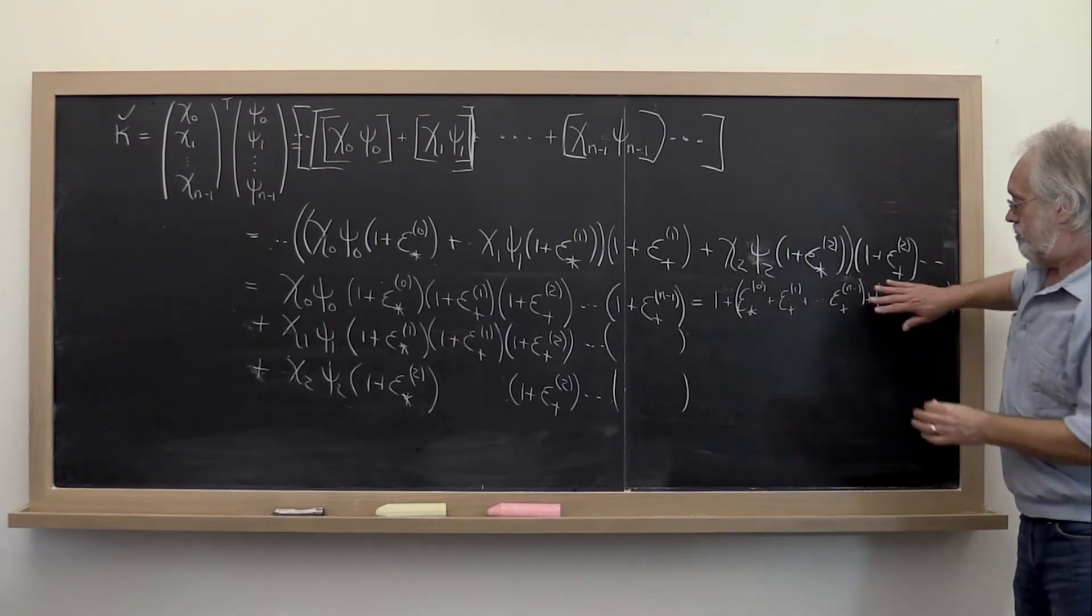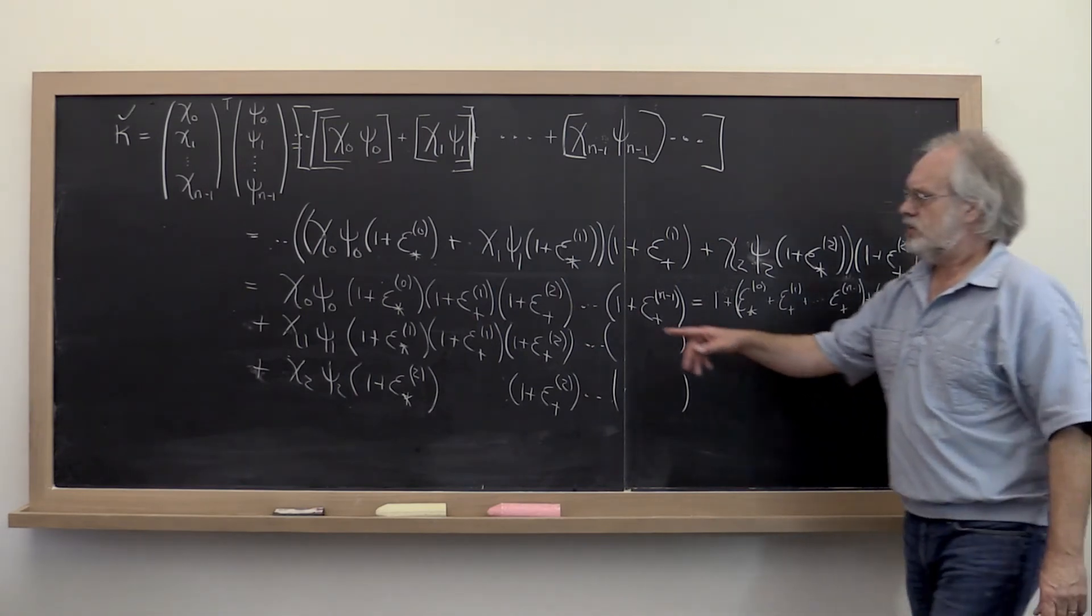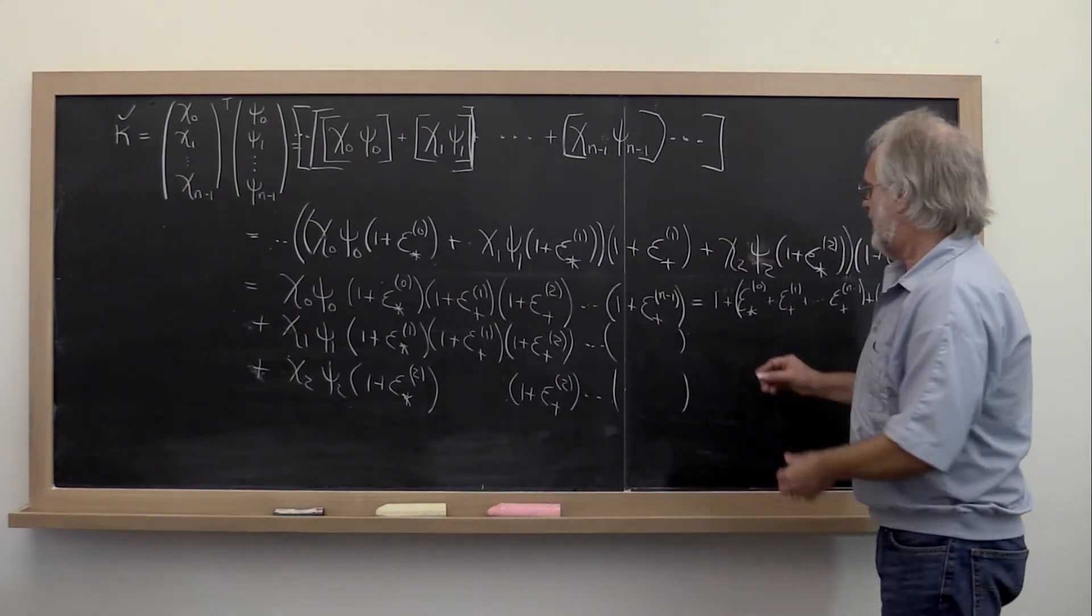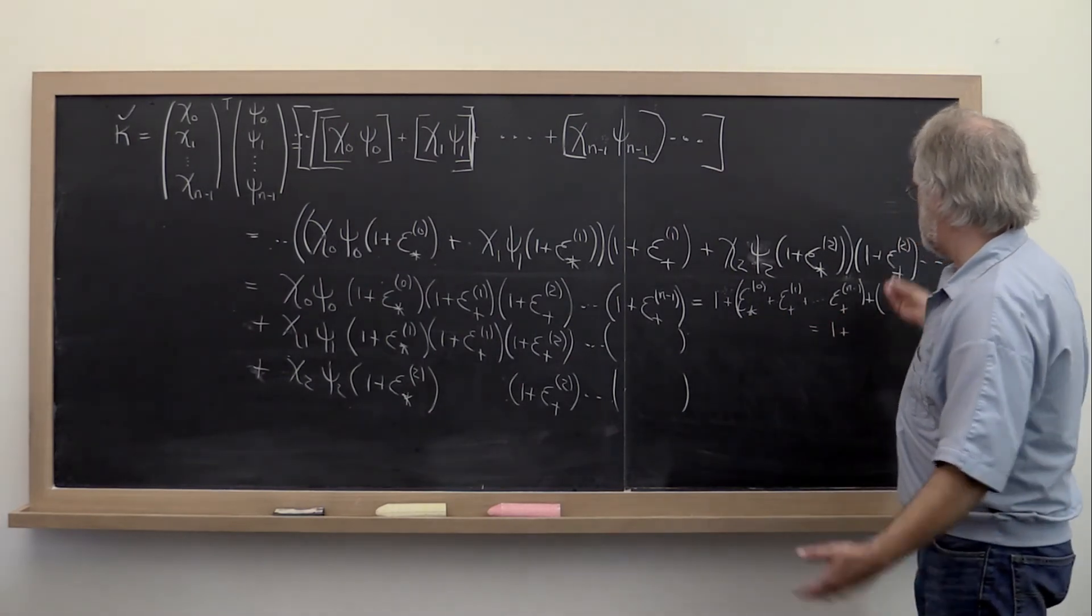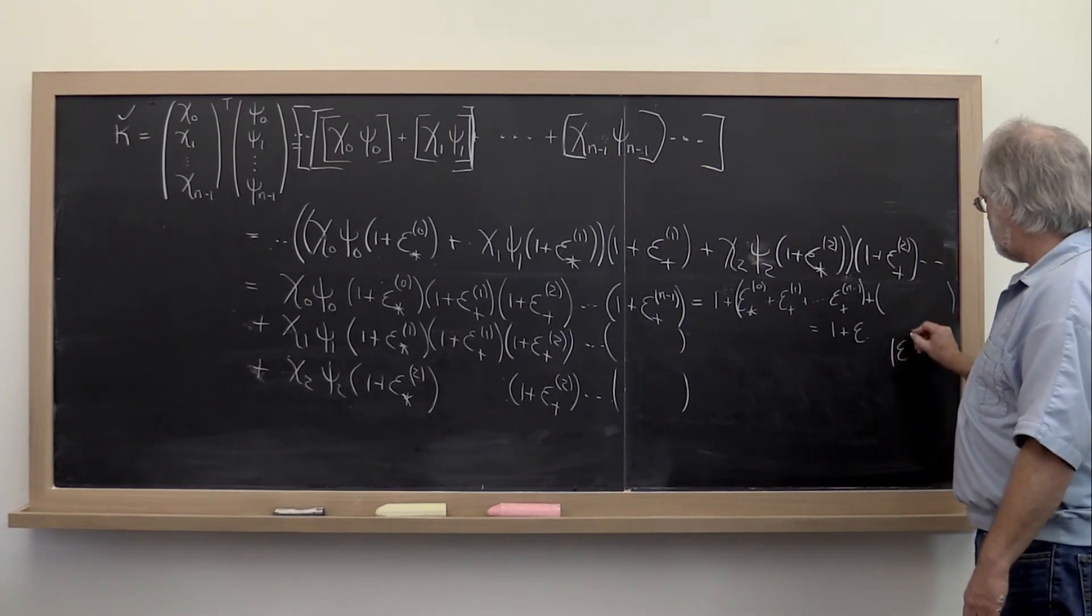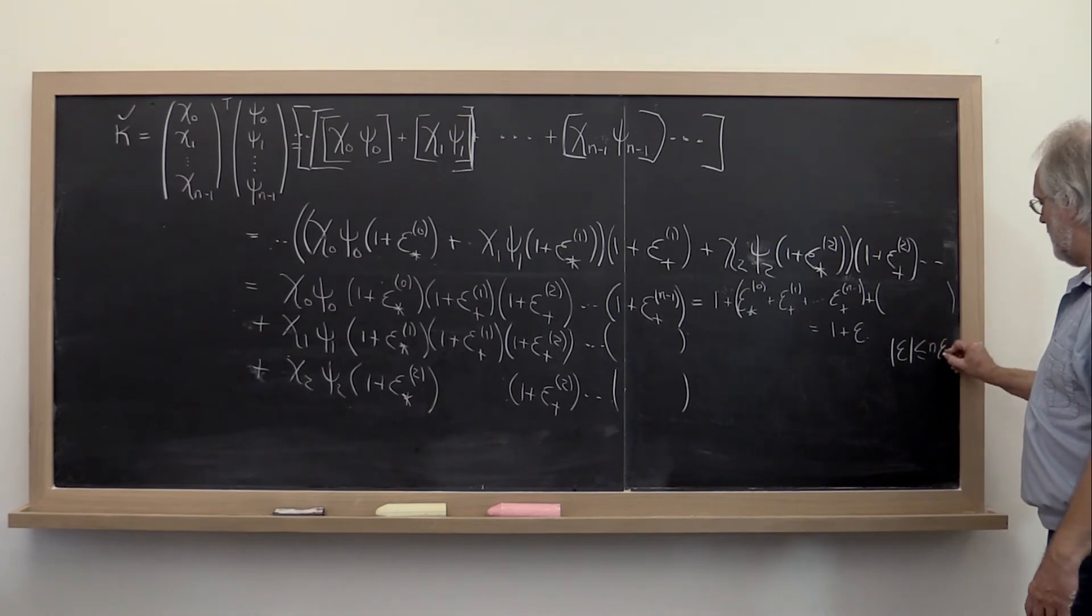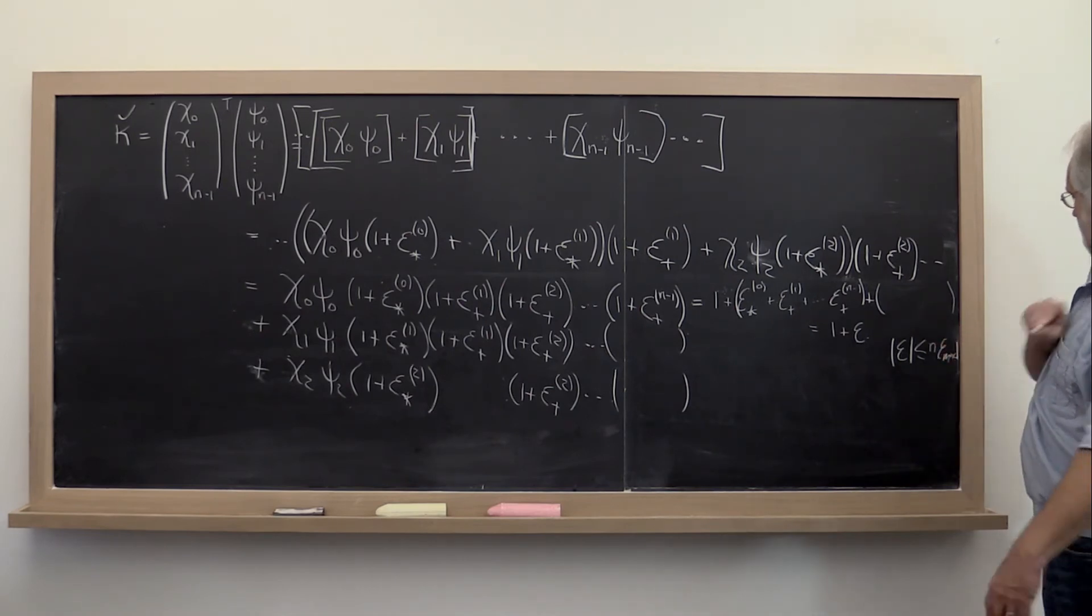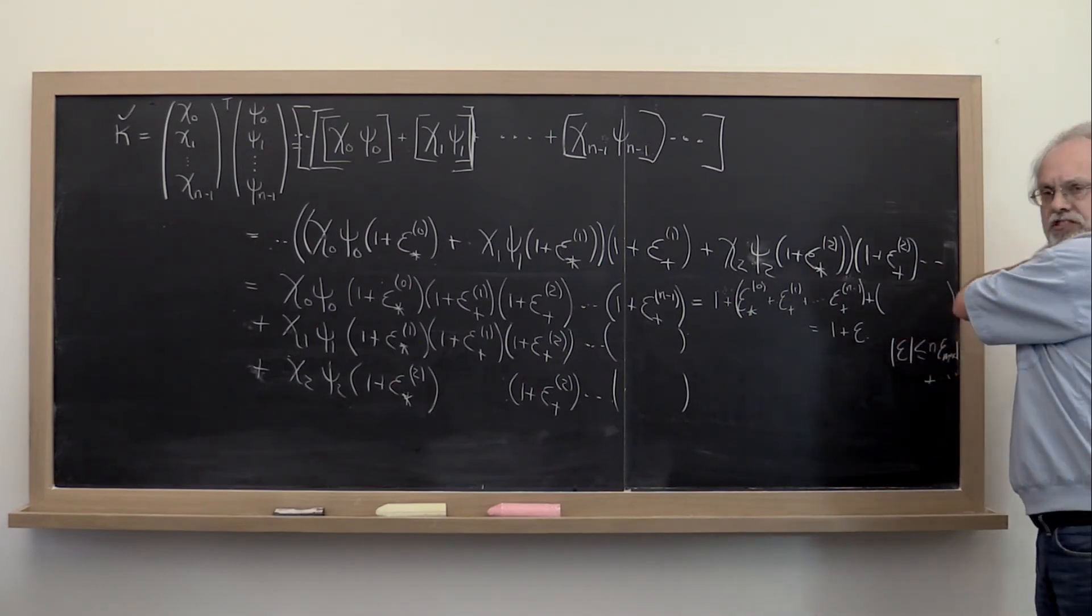So you kind of see that roughly speaking this first term ends up being equal to 1 plus some epsilon, where that epsilon in absolute value is less than or equal to n times the machine epsilon. 1 plus some epsilon, 1 plus some very small stuff.